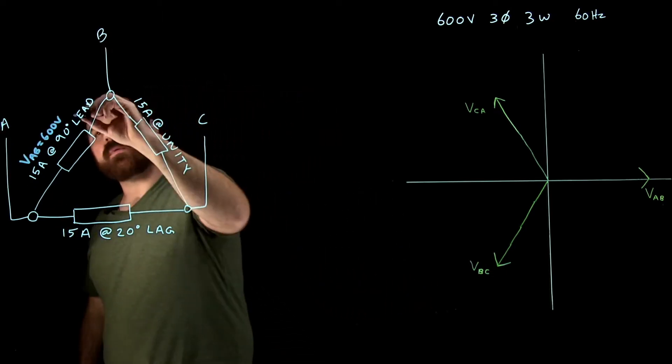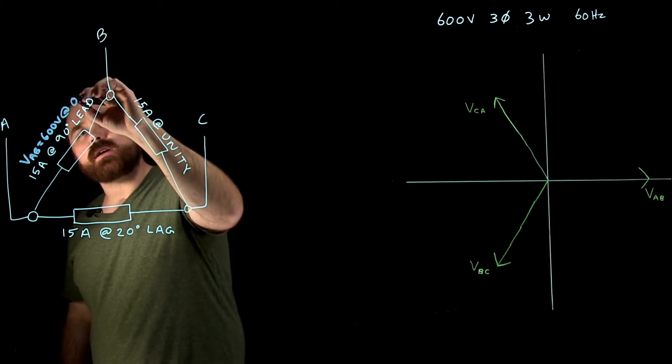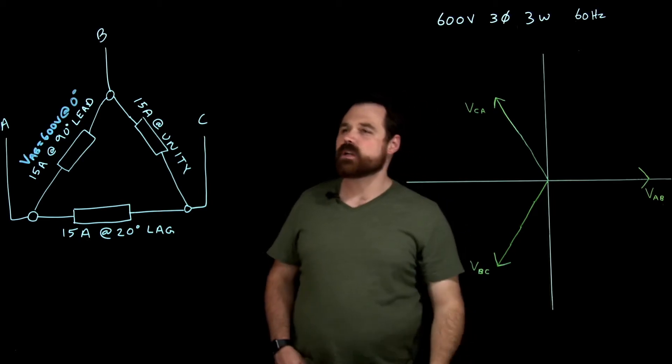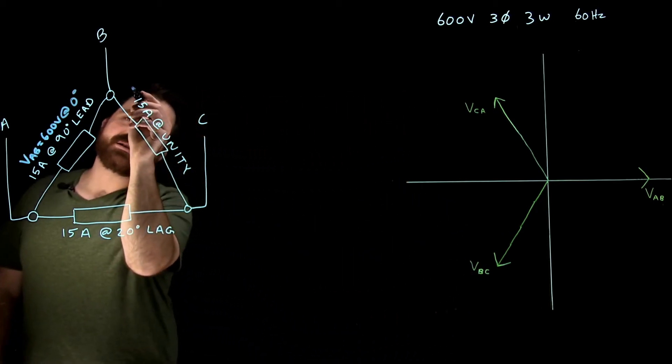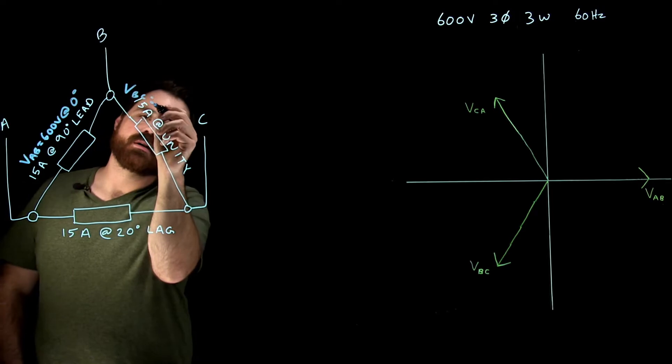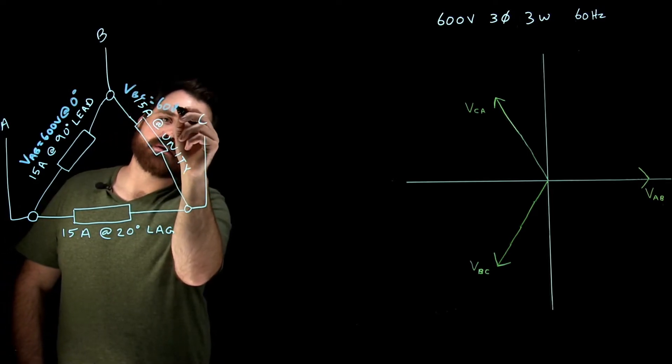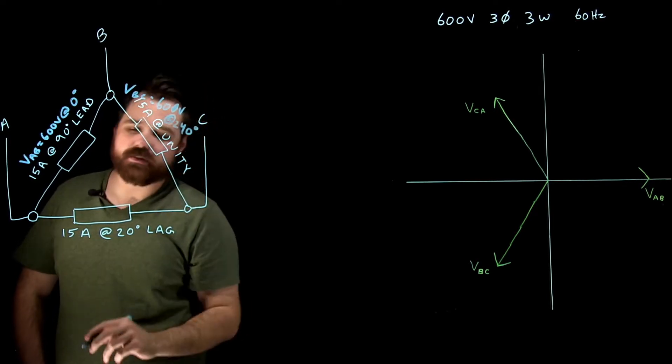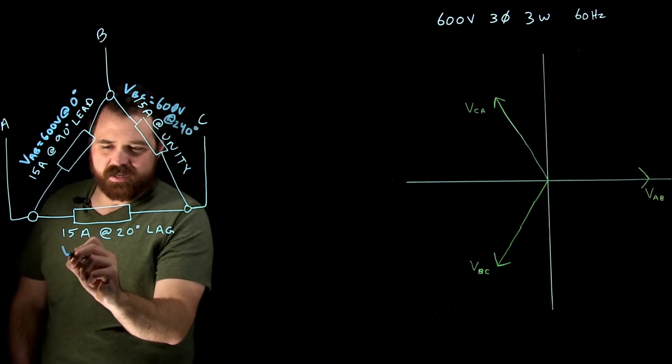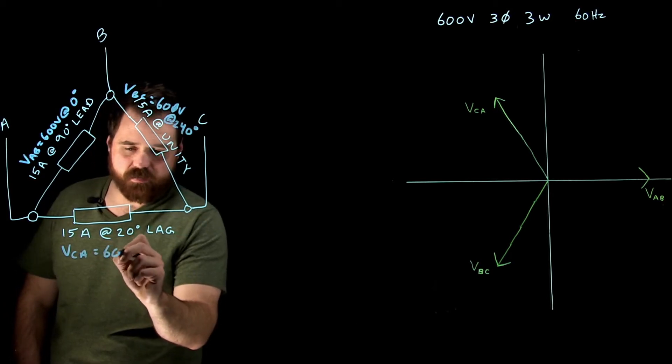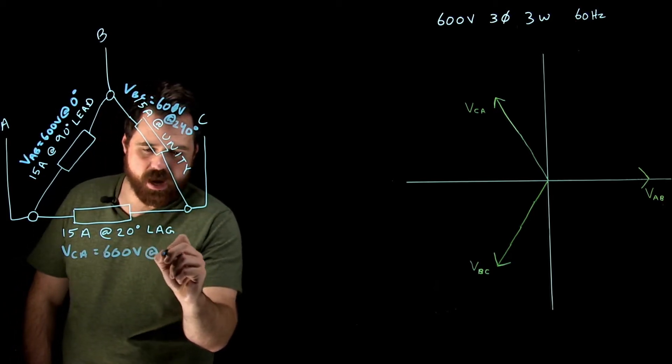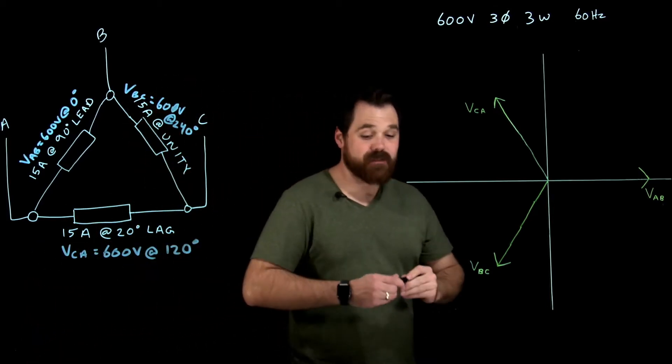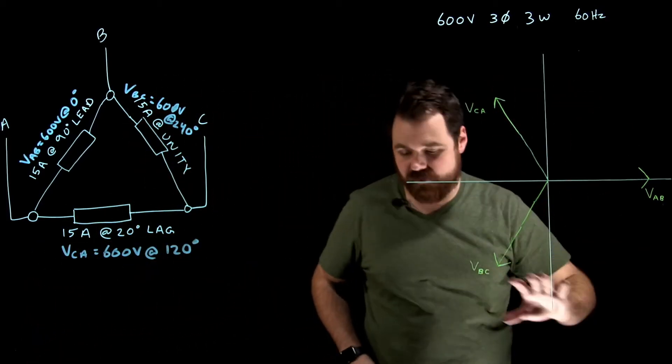So I got 600 volts, and we're going to use A to B as our reference, which puts it at zero degrees on our phasor diagram. B to C will be the exact same. V B to C equals 600 volts at 240 degrees. And then V C to A again will be 600 volts at 120 degrees.